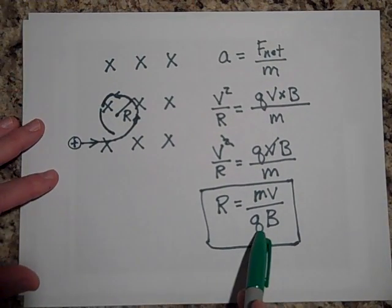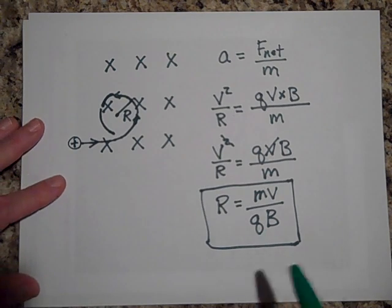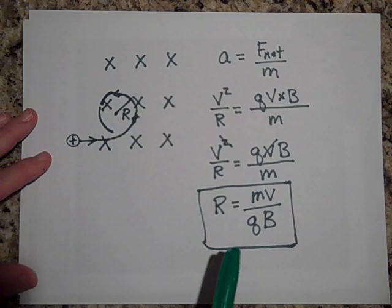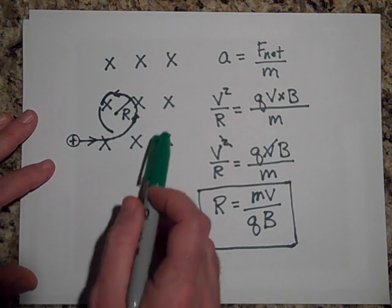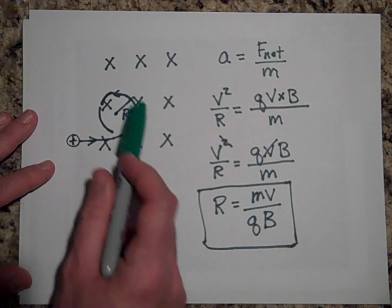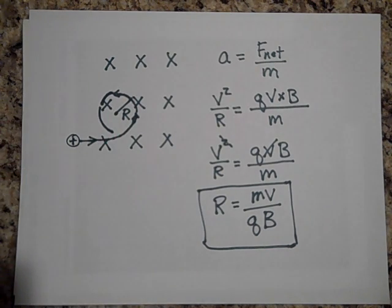If we dial up the B, if we make B, the magnetic field a lot stronger, do you see how that also causes a tighter turn? So all these things affect the magnetic field, or excuse me, the radius of the turn.